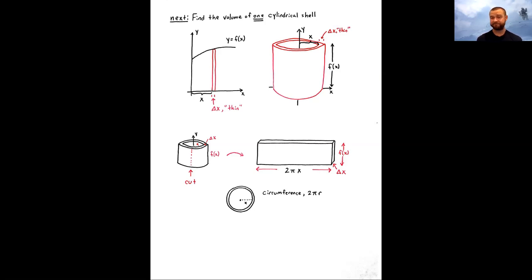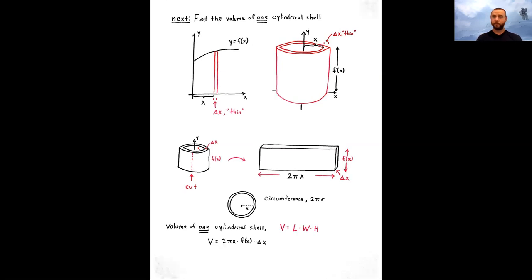And basically, that is it. Now we have all three dimensions. The volume of a rectangular box is length times width times height. If we multiply all three quantities — 2πx, f of x, and delta x — we get the volume of one cylindrical shell.